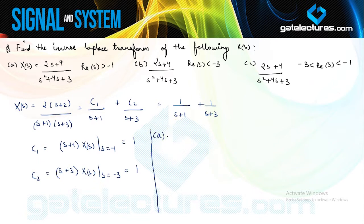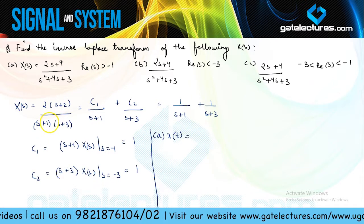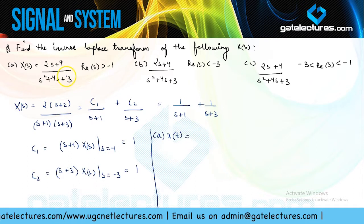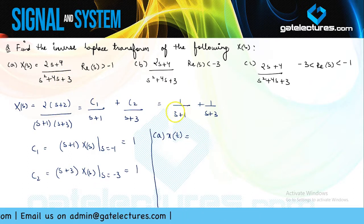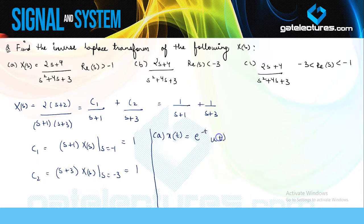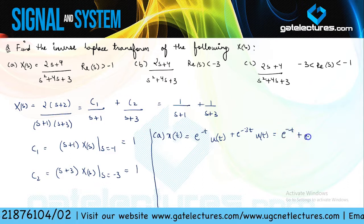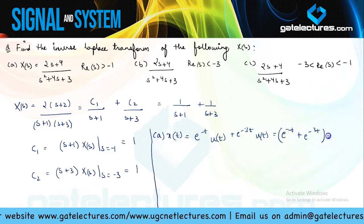The function has two poles occurring at minus 1 and minus 3. For the first part, if the ROC is sigma greater than minus 1 — that is, to the right of the rightmost pole — this means we are going to have a right-handed signal. The inverse Laplace of 1/(S + 1) is e^(−t)u(t) and of 1/(S + 3) is e^(−3t)u(t), so the answer is [e^(−t) + e^(−3t)] u(t).